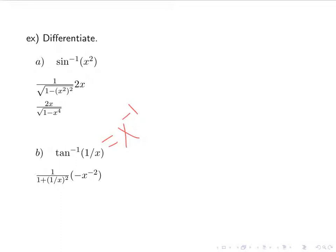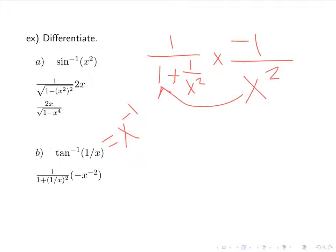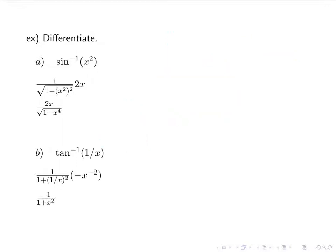So I'm going to be simplifying this. I have 1 over 1 plus 1 over x squared, times negative 1 over x squared. I'm going to distribute x squared to these two terms and then clean it up. When I do that, I get something really nice: negative 1 over 1 plus x squared, which is just the same as differentiating negative tan inverse of x — which is kind of interesting.